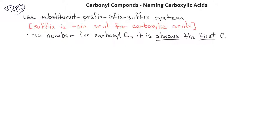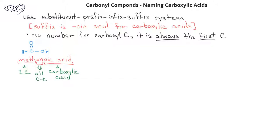Let's look at a few examples of naming carboxylic acids. I'll note that these first few carboxylic acids also have common names. This first carboxylic acid, with just the carbonyl carbon as the only carbon, is named methanoic acid. We switch the suffix -e with the suffix -oic acid to indicate that we have a carboxylic acid.